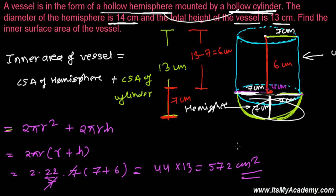So the inner surface area of the vessel is 572 square centimeters. To solve any mensuration problem, follow three steps: first, understand the question; second, visualize and draw the diagram; third, apply the appropriate formula. If you have any confusion, please comment below. Don't forget to subscribe and hit the like button!